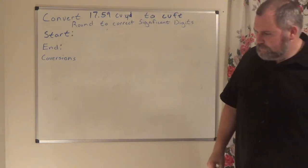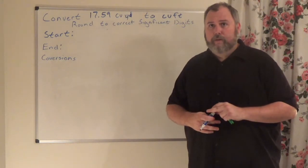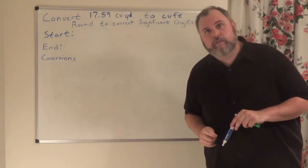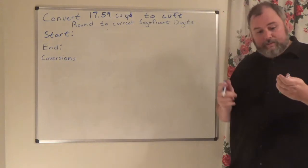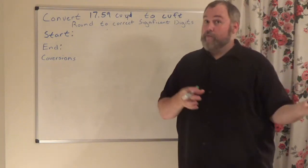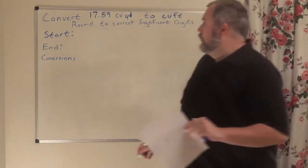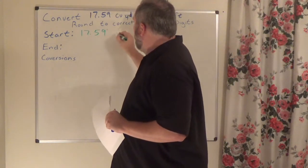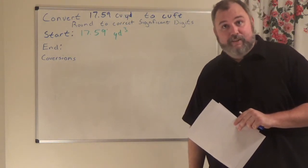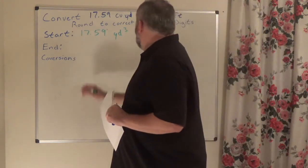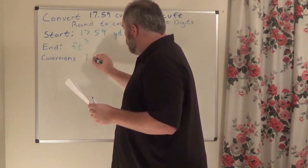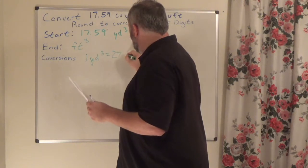Pause the video and try this on your own. My start is 17.59 cubic yards — I like writing that as yards to the third power rather than CUYD. My end is cubic feet. My conversion factor is: one cubic yard is equal to 27 cubic feet.